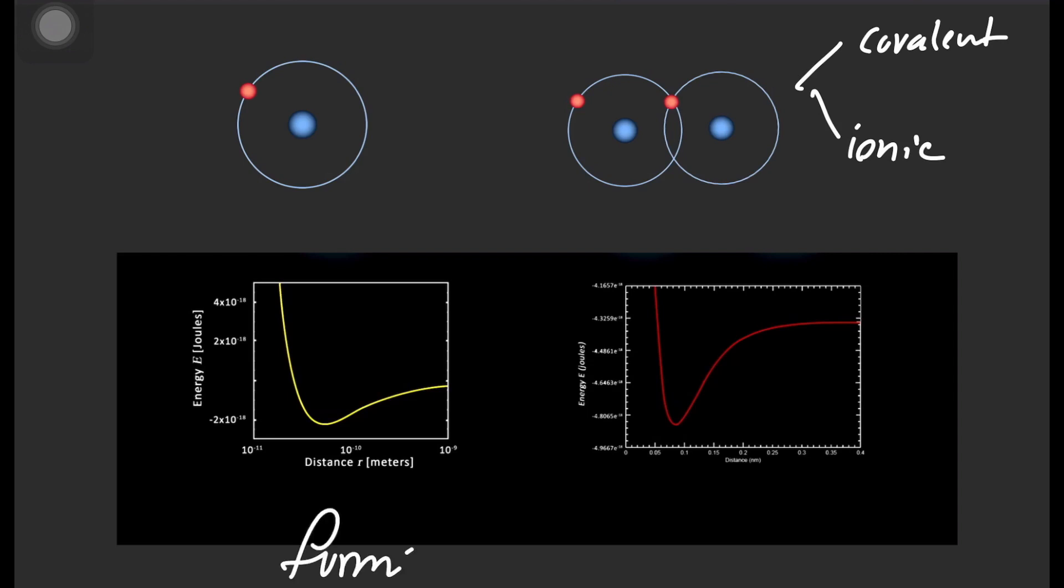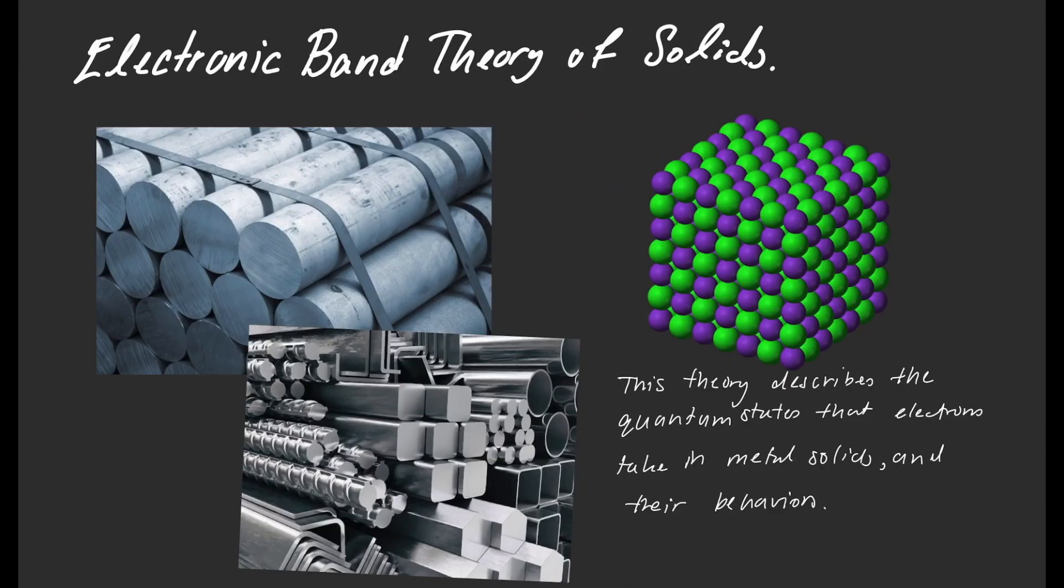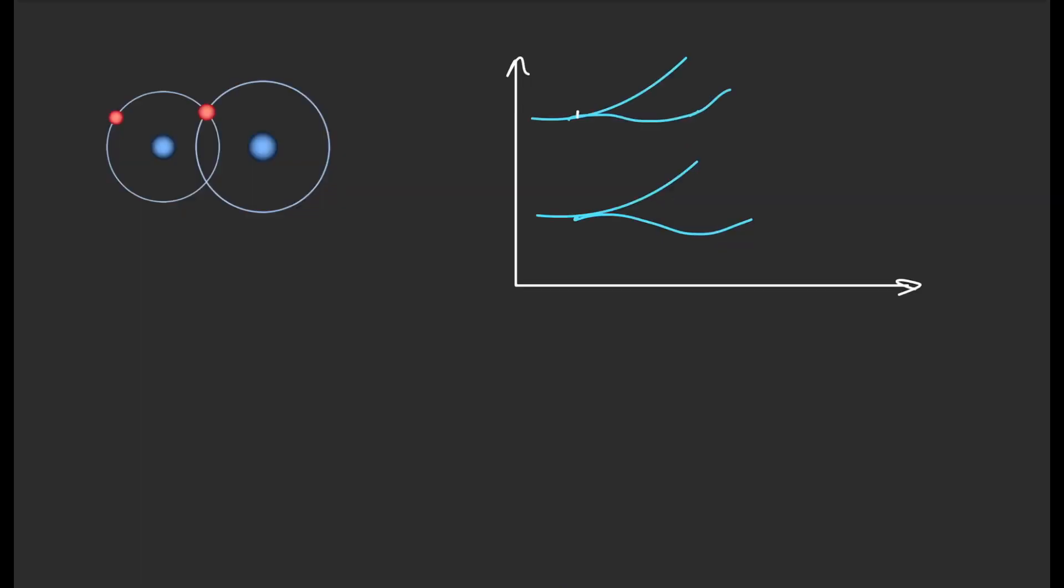The formation of molecules and molecular bonds are the fundamental foundations of other scientific theories like the electron band theory of solids. This theory describes the quantum states that electrons take in metal solids and their behaviors. If we recall the formation of molecular bonds, suppose one atom is found in the 1s quantum state and the other in the 2p quantum state and they form a bond. The outer electron probability overlaps to form a molecular orbit and they obtain a lower state of energy.